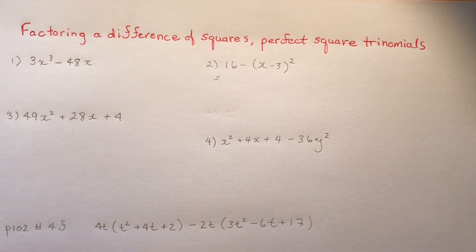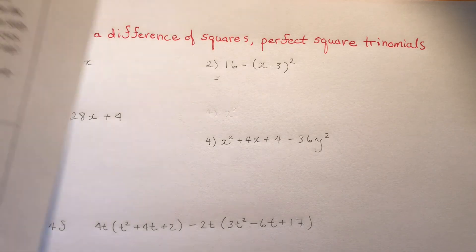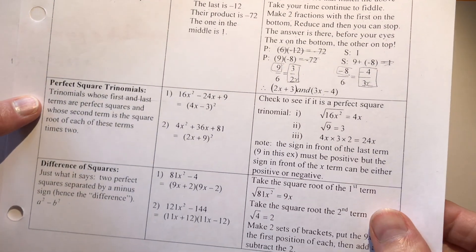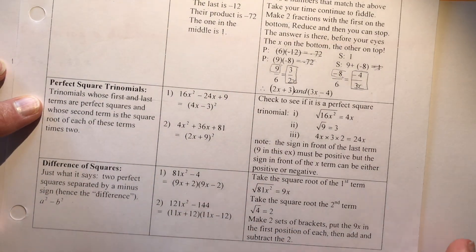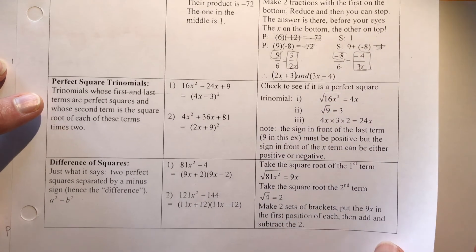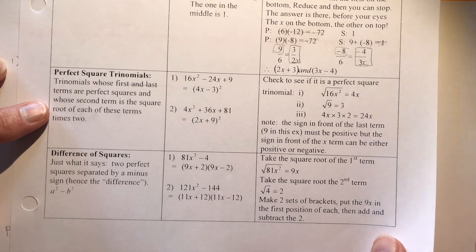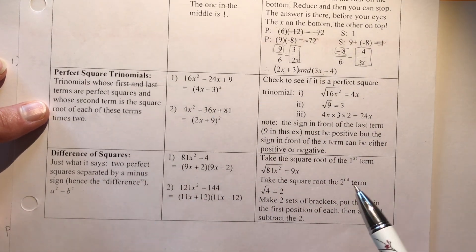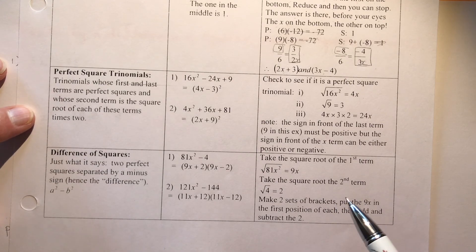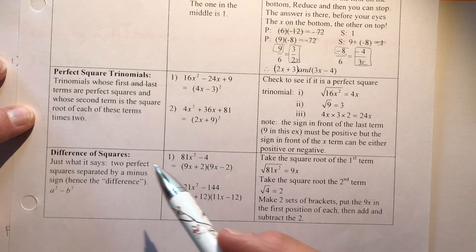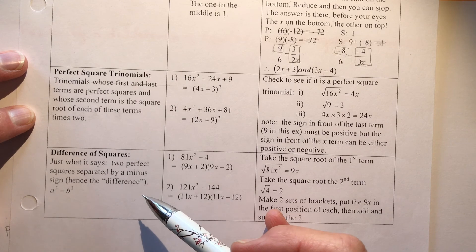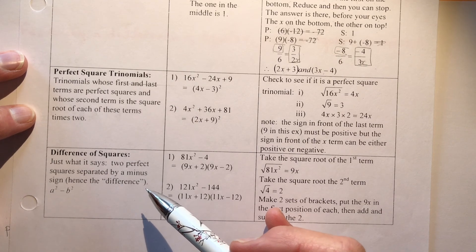The last factoring we need to look at is perfect square trinomials and difference of squares. Referring you back to the handout on my wiki site — you can download and print it for review. You did both of these in grade 10, so let's take a look.